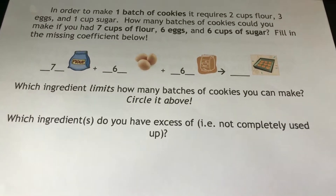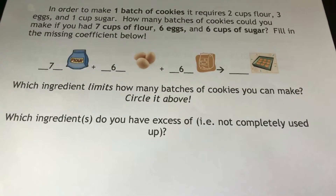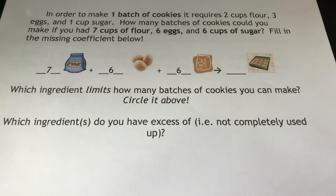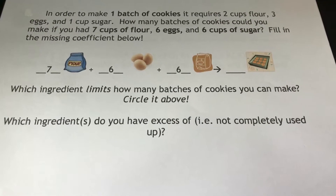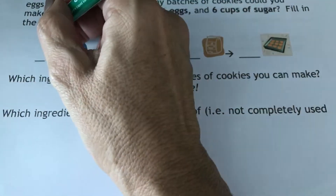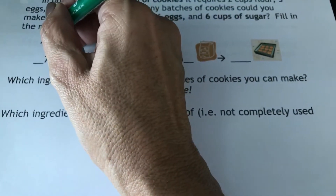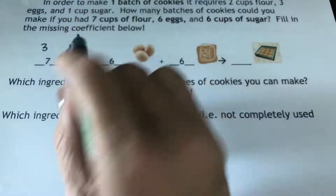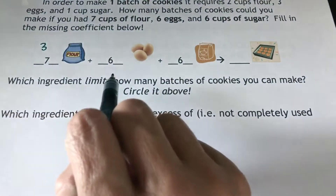The one cup left over might confuse you and make you think you can make more than three batches. No, you can't — you can only make exactly three batches. So the maximum number of batches we can make with the flour that we have is three batches.